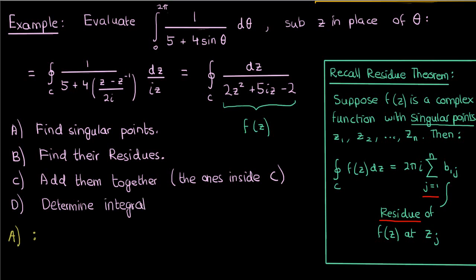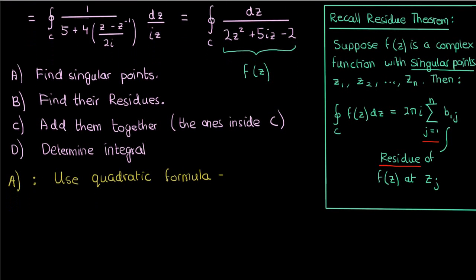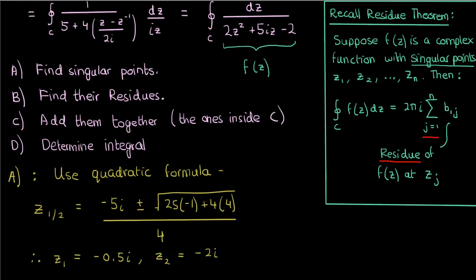So let's start applying the residue theorem by first finding the singular points of our function. The singular points here would be the values of z at which the function is undefined, which cause the denominator to be 0. To find those singular points, I can use the quadratic formula to find the zeros of the denominator. If I do that, then I'll get two distinct values of z which make the denominator 0. The first is going to be negative 0.5i if I use the plus sign in the quadratic formula, and the second is negative 2i if I use the minus sign in the quadratic formula.